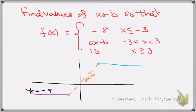When you look in between minus 3 and 3, the function is a line, which is ax minus b, and then when you look at x greater than or equal to 3, the function is y is equal to 13.